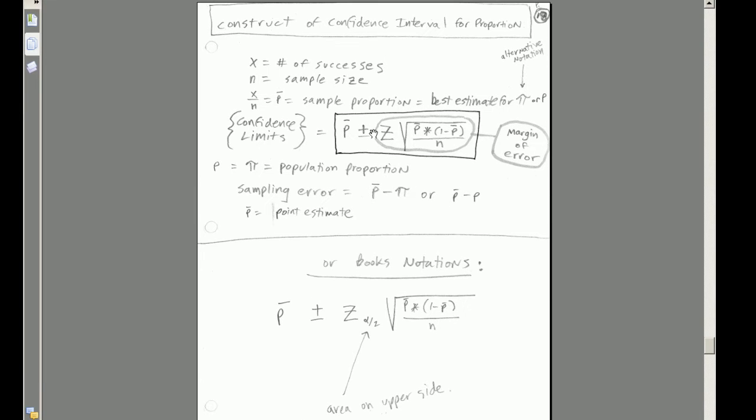In this video, we want to talk about how to estimate a population proportion by building a confidence interval. Here's our formula. And it looks very similar to the formulas we used for sigma known and sigma not known when we use the z and t distribution. Here, we're going to use the z distribution, our normal norm dot s inverse functions, for example.